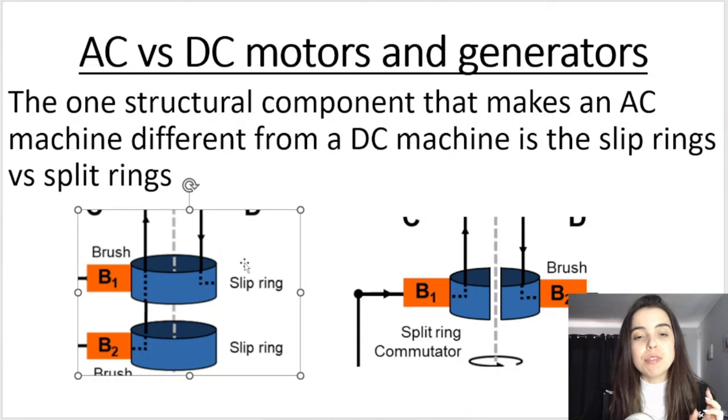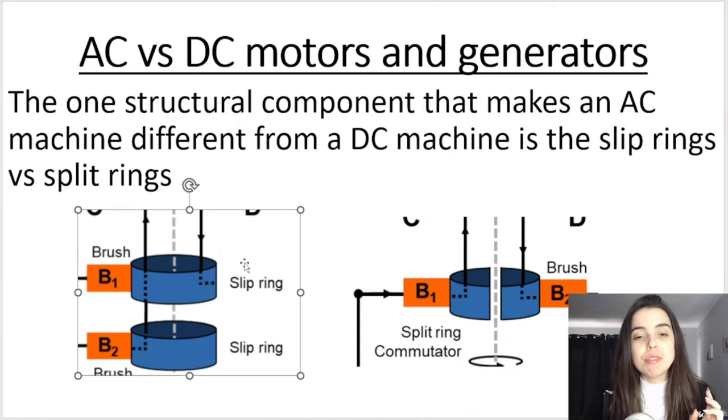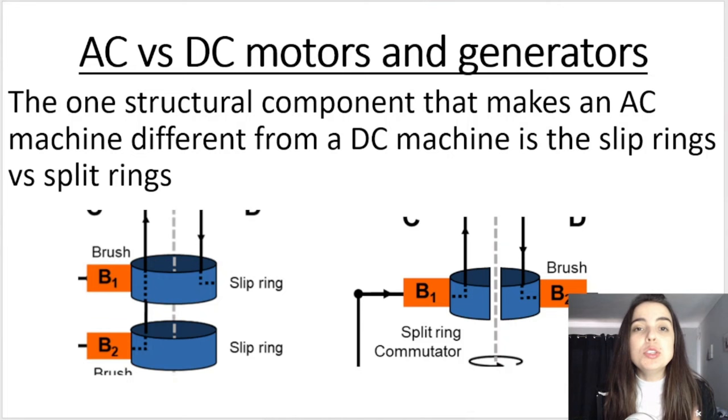Now, students often get confused when they see two different generators and one of them have rings that look like this, they're called slip rings, and the other one has a ring that looks like this, it's called a split ring. Students sometimes think that one represents a generator while the other one represents a motor. This is not true.